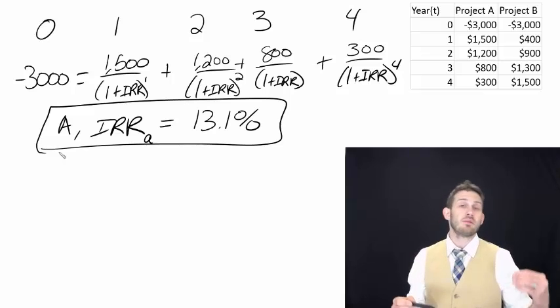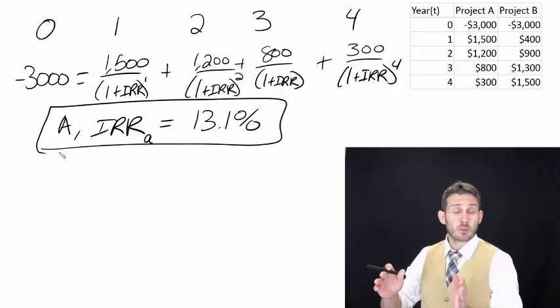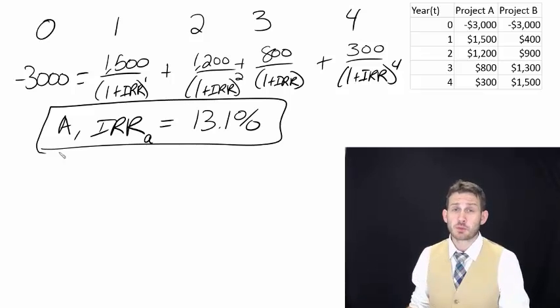So that is the rate at which we would break even. That would give us an NPV of zero. So any required return that is higher than 13.1%, if my required return is 15% and this project is generating for me 13%, will I do this project?